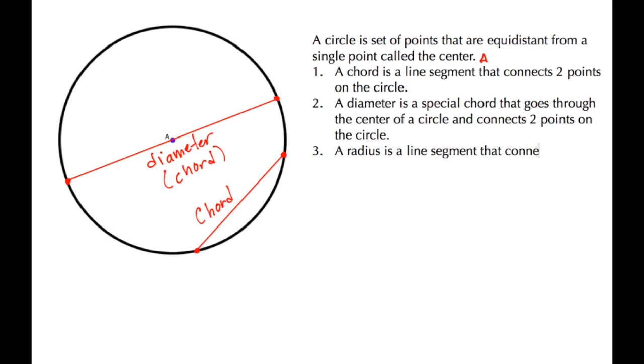A radius is a line segment that connects the center of the circle with a point on the circle. Let's draw that in. Let's start here with the center of the circle and go out to a point on the circle. I'm going to draw in the points here to show that, and this here is a radius.